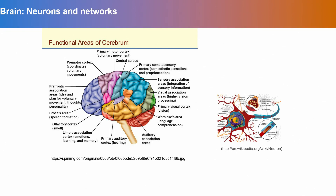For example, the pink shaded area is where voluntary movement happens — this region controls voluntary movement. Then there is sensory association, where integration of sensory information occurs. There is visual association for vision processing, and then the primary visual cortex and language comprehension area. There are also auditory association areas, and we have emotions, learning, memory in the red shaded region, the olfactory cortex, speech formation, and so forth. There are a lot of interesting functionalities — from motor control to thoughts, emotions, and behavior — that the brain controls, through a complicated chemical electrical message exchange process.